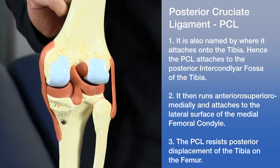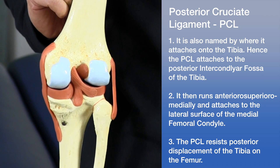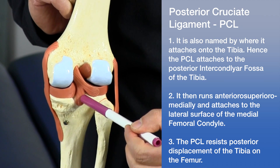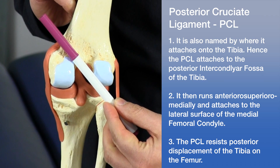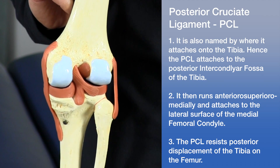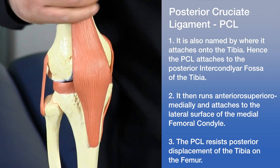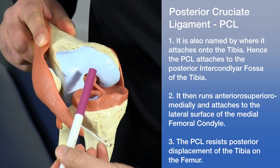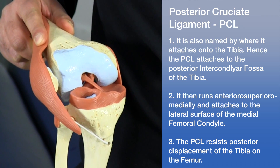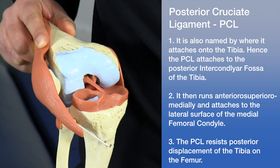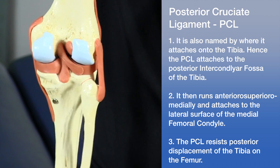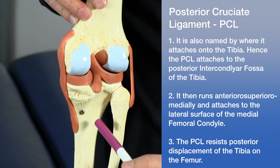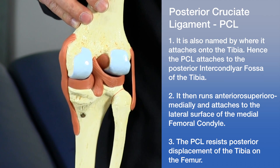The posterior cruciate ligament or PCL attaches to the posterior intercondylar area of the tibia and runs anterior, superior, and medially, attaching to the lateral surface of the medial femoral condyle. The PCL resists posterior displacement of the tibia on the femur — it resists movement of the tibia in a posterior direction.